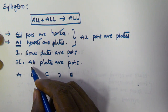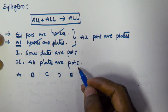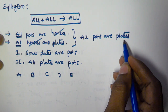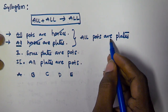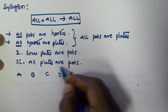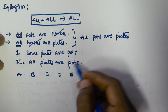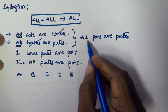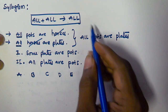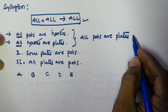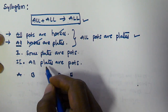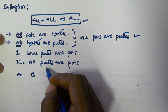Checking the given conclusions: conclusion two states 'All plates are parts,' but what we actually derived is 'All parts are plates.' So the subject and predicates are interchanged here. This derived conclusion 'All parts are plates' is actually true, but in conclusion two the plates and parts are interchanged.